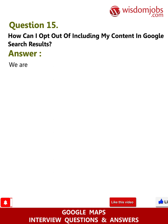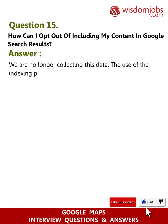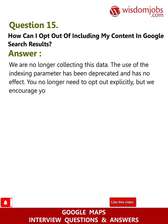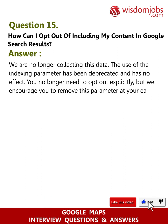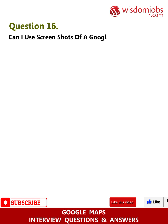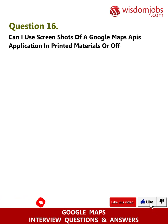Question 15: How can I opt out of including my content in Google Search results? Answer: We are no longer collecting this data. The use of the indexing parameter has been deprecated and has no effect. You no longer need to opt out explicitly, but we encourage you to remove this parameter at your earliest convenience.